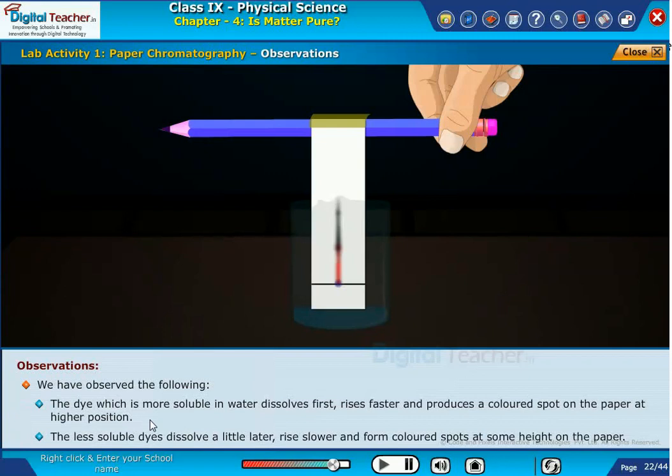The less soluble dyes dissolve a little later, rise slower, and form colored spots at some height on the paper.